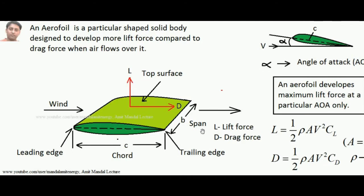Before understanding the Blade Element Method, let's have a short review on what is an aerofoil, because the horizontal axis wind turbine blades are actually aerofoil shaped. An aerofoil is a particular shaped solid body designed to develop more lift force compared to drag force when air flows over it. When wind flows over it, two kinds of forces are developed: a drag force D, which is parallel to the direction of wind flow, and a lift force L, which is perpendicular to the direction of wind flow. L and D are perpendicular to each other.